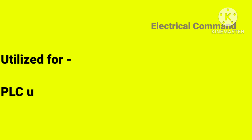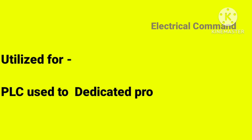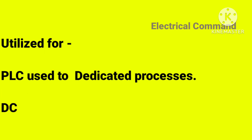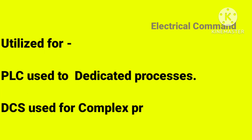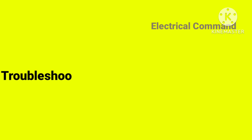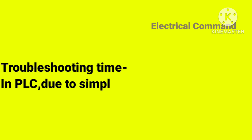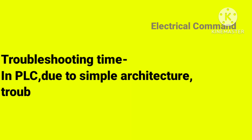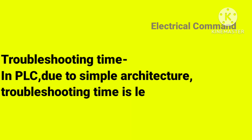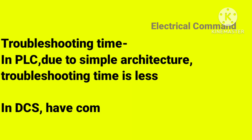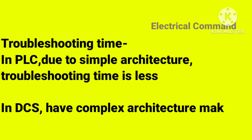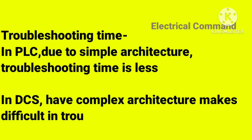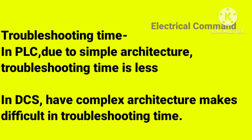Internal architecture: PLC is used for dedicated processing, while DCS is used for complex processes. Troubleshooting time: due to PLC's simple architecture, troubleshooting time is less. DCS has complex architecture, which makes troubleshooting more difficult.